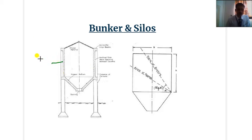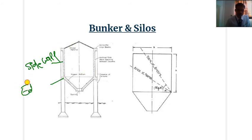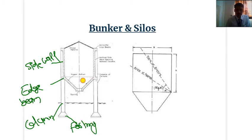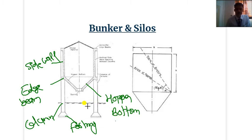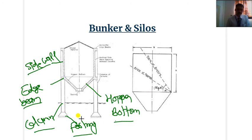Looking at the standard diagram of the storage bin, the components are: side wall, edge beam at the corner, column, footing, and hopper bottom. These five are the basic components for storage bins. At the time of designing a storage bin like bunker or silo, we have to design individually the side wall, edge beam, hopper bottom, column, and footing. By designing these five components individually, we can completely design the storage bin.